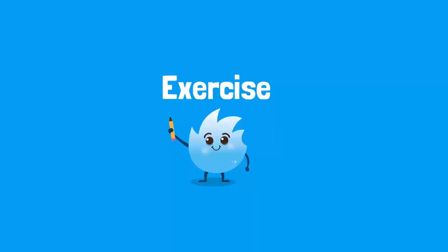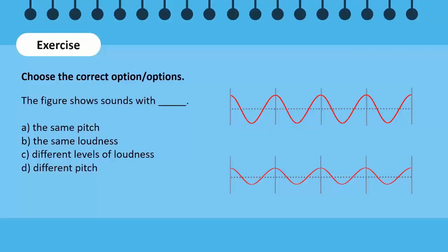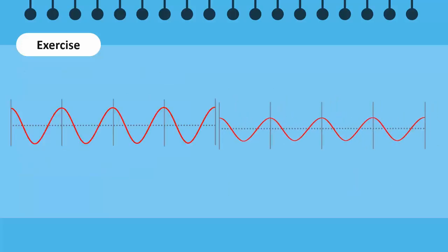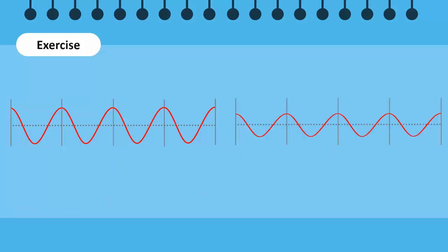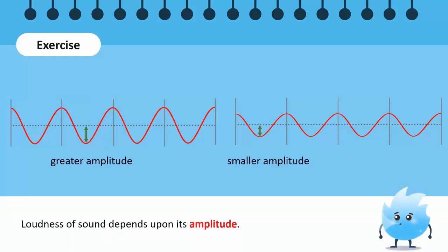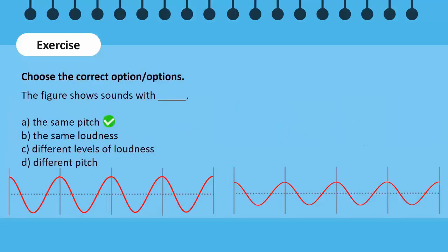Now it is time for a quick exercise. Take a minute and discuss with each other. Look at both waves carefully. Notice that both waves have the same frequency, which means that both waves have the same pitch. The amplitude of the wave on the left side is greater than the amplitude of the wave on the right side. Since the loudness of sound depends upon its amplitude, the sound on the left side is louder. Hence, options A and C are correct.